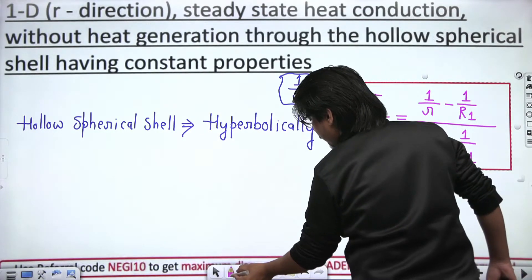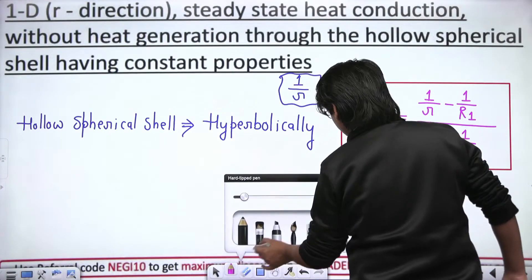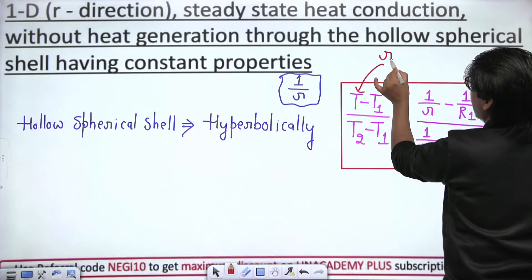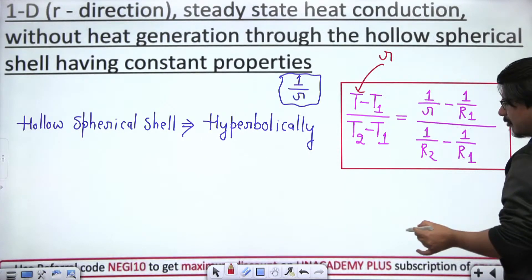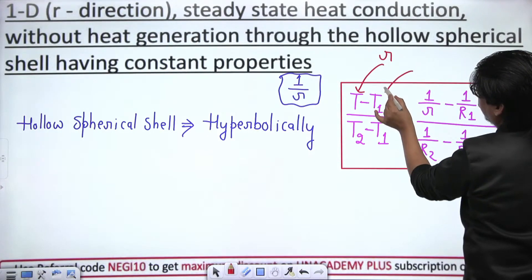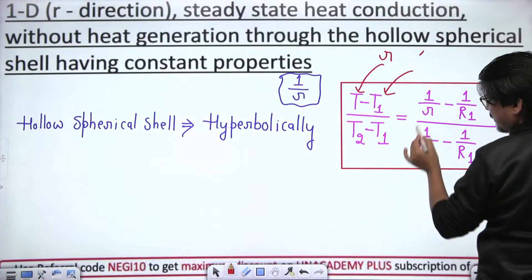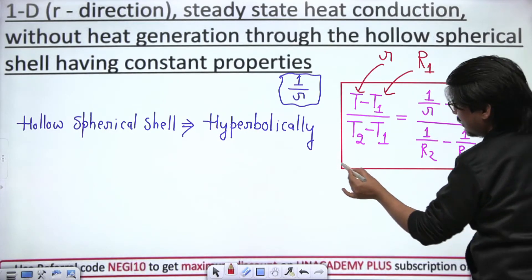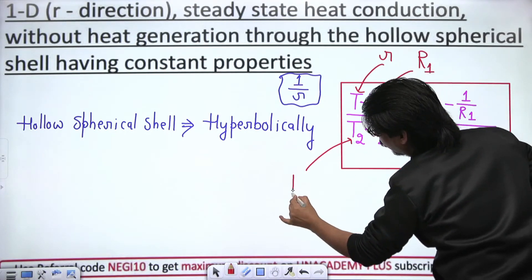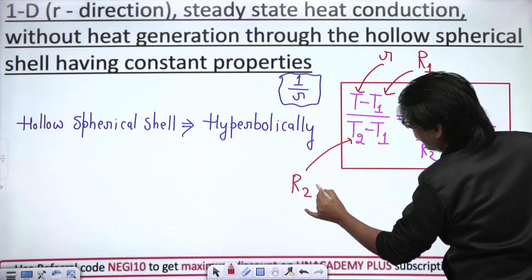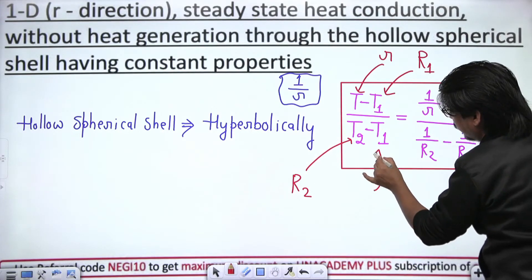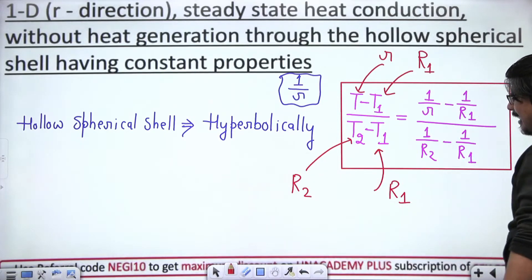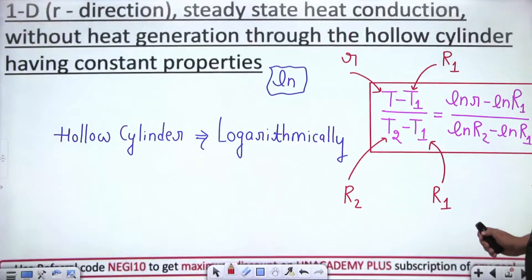In this formula, T is the temperature at radial distance small r. T1 is the temperature on the inner surface of the hollow spherical shell at radial distance R1. T2 is the temperature on the outer surface of the hollow spherical shell at radial distance R2. And T1 on the right side corresponds to radial distance R1 as well.